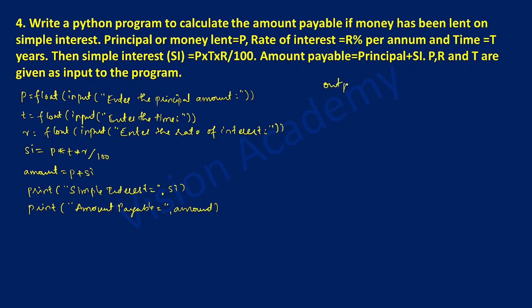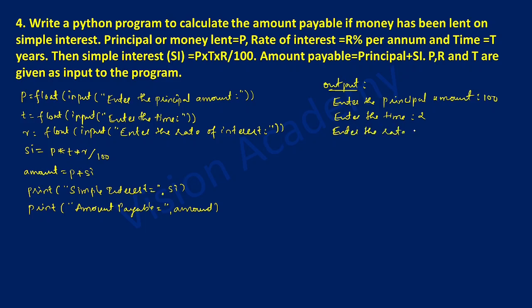Now let us check out the output of this program. Once we execute it, it will ask the user to enter the principal amount — printed as 'enter the principal amount'. For example, I am going to enter 100 rupees. Next it will ask the user to enter the time — here I am going to write 2 years. Next it will ask the user to enter the rate of interest — I am going to write 5 percent.